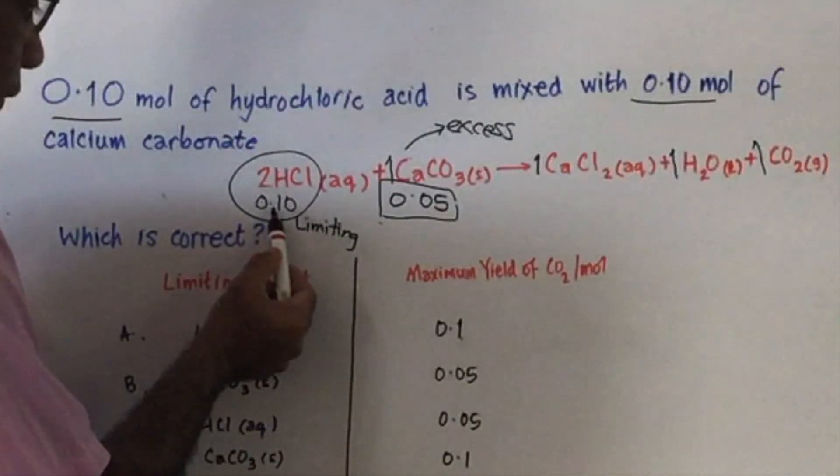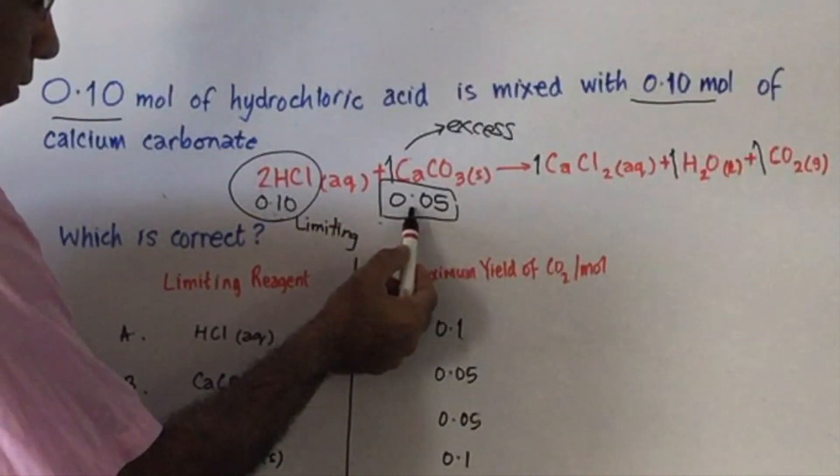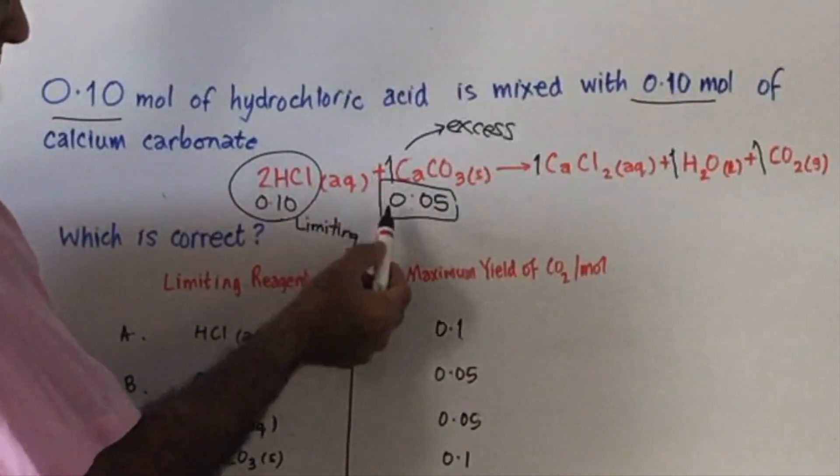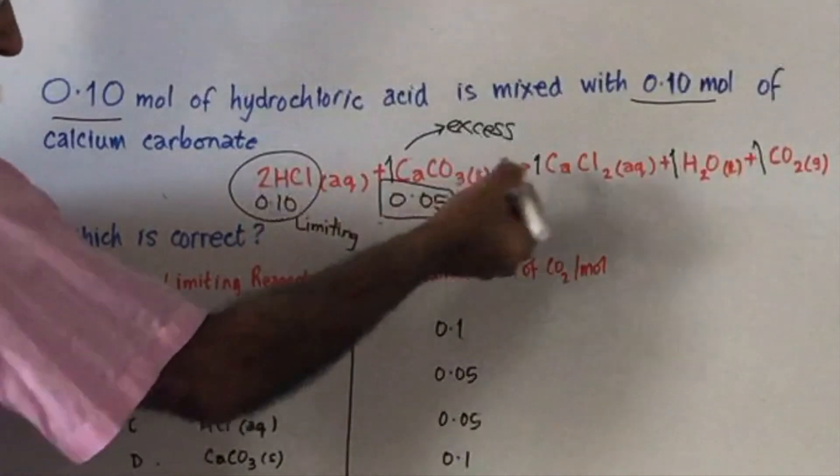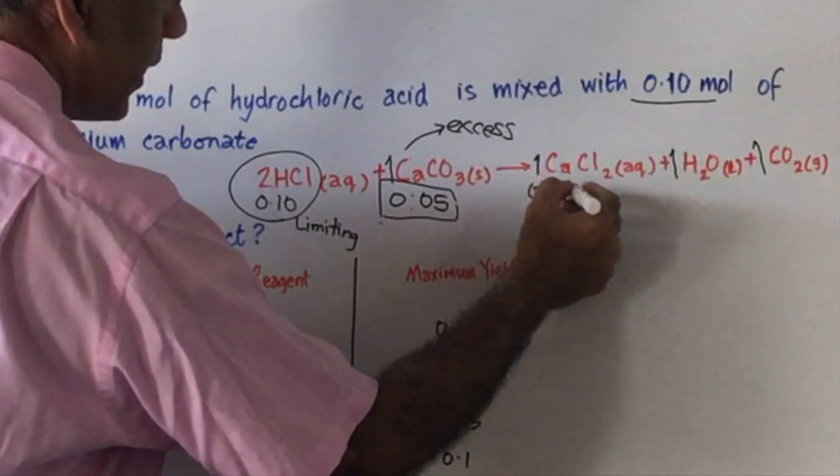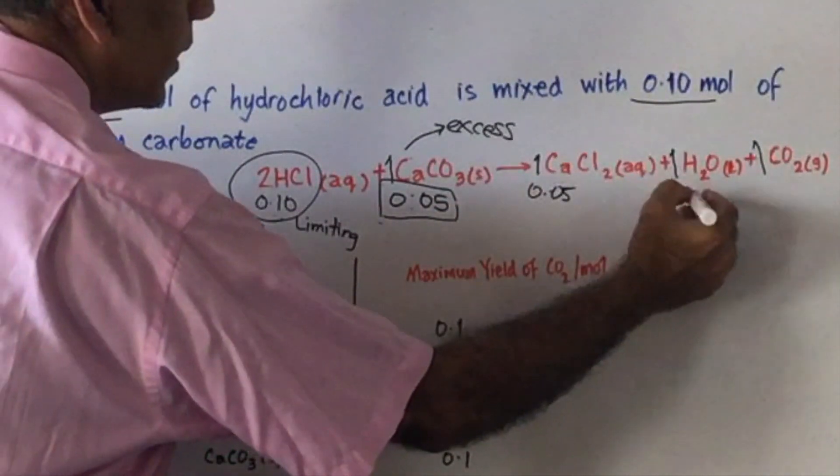Because the reaction is between 0.10 and 0.05, it means wherever you have a 1, you're going to get 0.05 to satisfy the ratio. So it's going to be 0.05 moles here, here, and here.